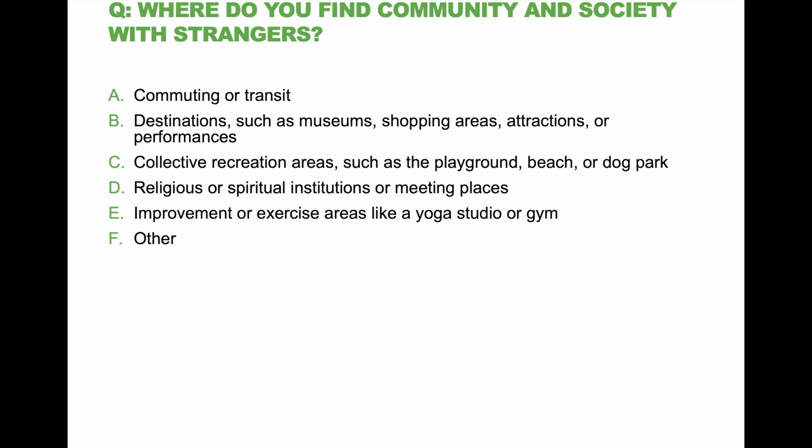Question: Where do you find community and society with strangers? Commuting or transit. Destinations such as museums, shopping areas, attractions or performances. Collective recreation areas such as the playground, beach, or dog park. Religious or spiritual institutions or meeting places. Improvement or exercise areas like a yoga studio or gym. Or other — write in the comments.